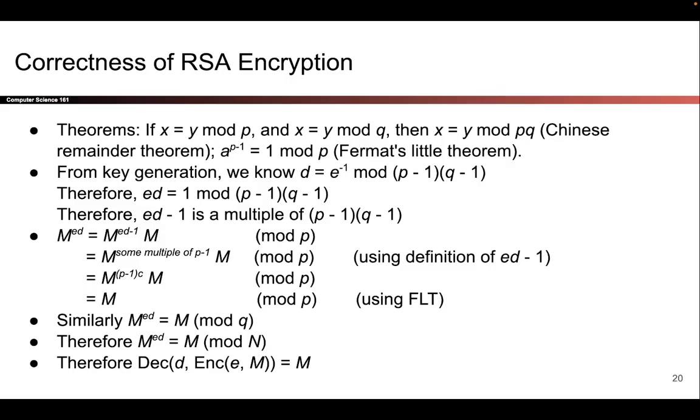Once we have our theorems, we're ready to start proving things. As a reminder, the way that we define d is this very specific equation. We said that d is the inverse of e modulo (p-1)(q-1). When d and e are inverses modulo (p-1)(q-1), that means if you take e times d, you should get 1 modulo (p-1)(q-1). That's what it means for two numbers to be inverses.